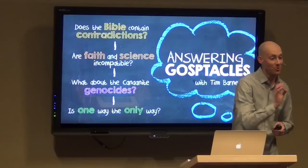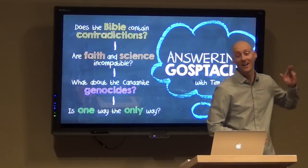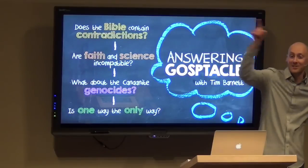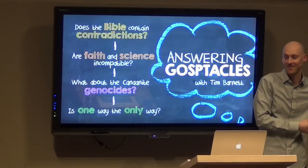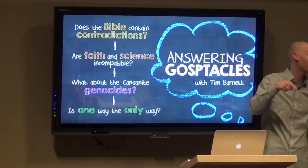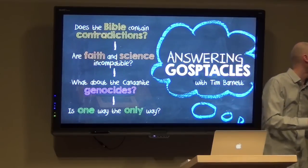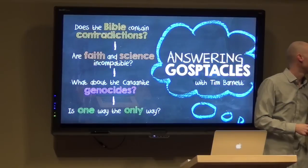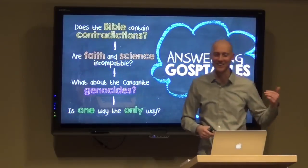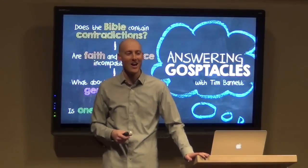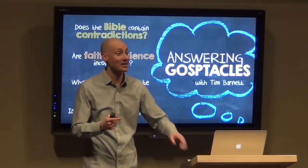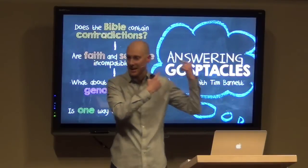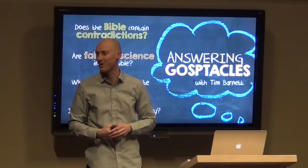Then I paint one of the dimes red, and I blindfold Mike and say: pick the red one out of all the dimes, or you're dead. That's the chances of getting the life-permitting gravitational constant. You died in the last illustration. The chances of you picking the red dime are actually better than getting the gravitational constant — one part in 10 to the 40th power.